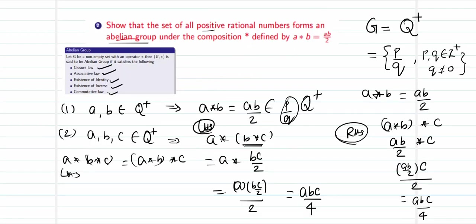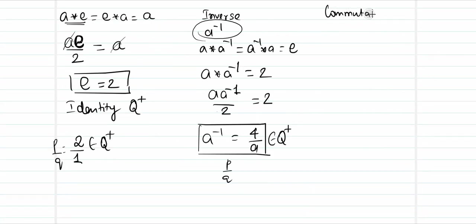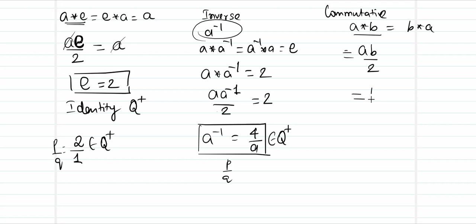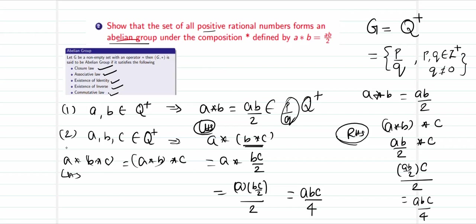For the commutative law: I need to show a * b = b * a. From the binary operation, a * b = ab/2, which is a simple product of positive rationals, and this equals ba/2 = b * a. So the commutative law is also true. Since all five properties hold, the set of positive rational numbers forms an abelian group under the binary operation star.